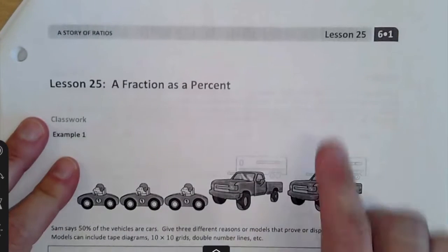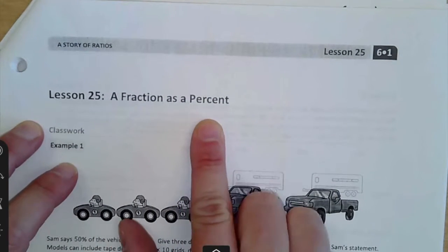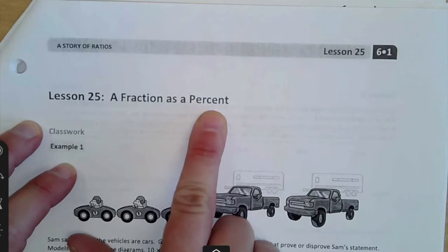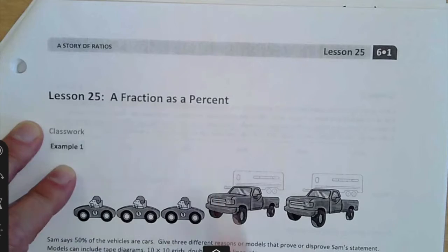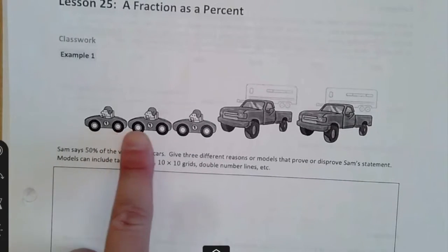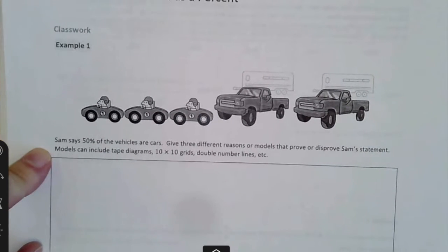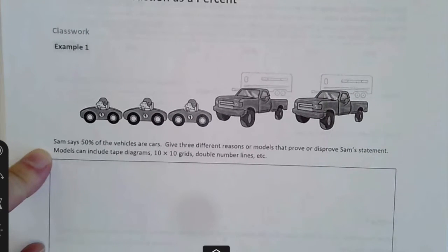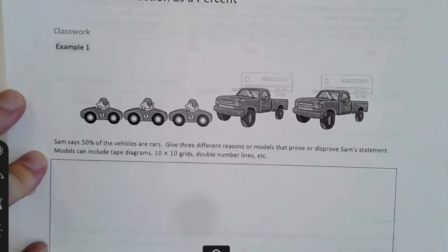This one is lesson 25, a fraction as a percent. If you remember, percents are always out of 100, so you can make any fraction a number out of 100. The first example, I see three cars and two trucks. Sam says 50% of the vehicles are cars. Can you give three different reasons or models that either prove or disprove Sam's statement?